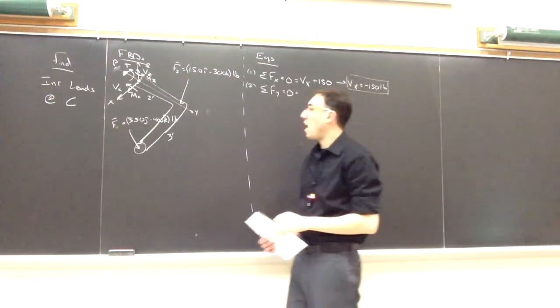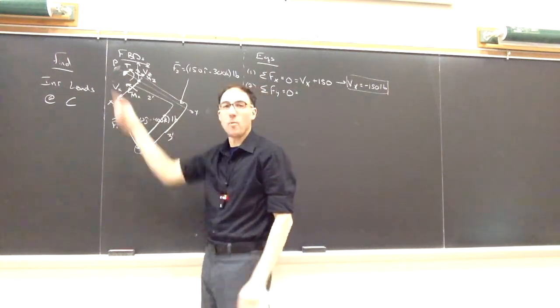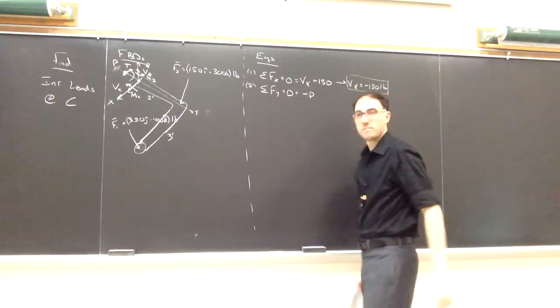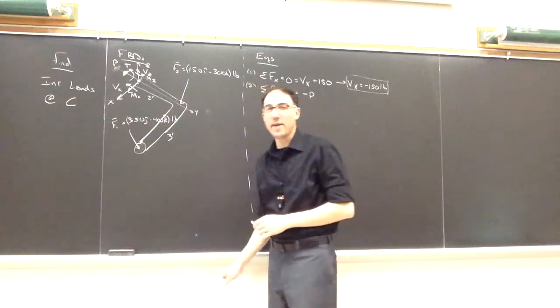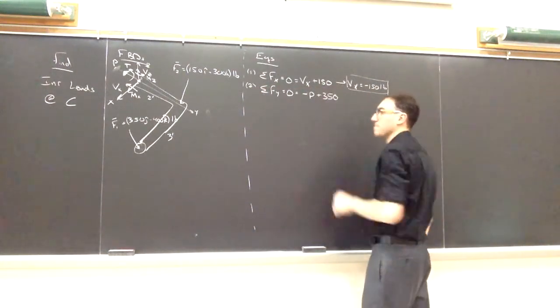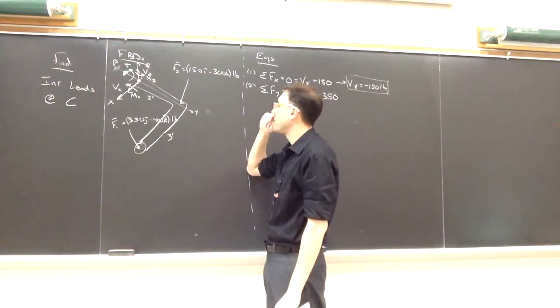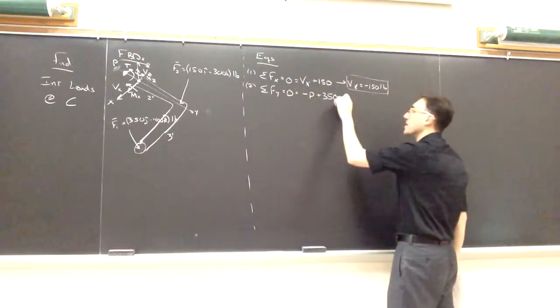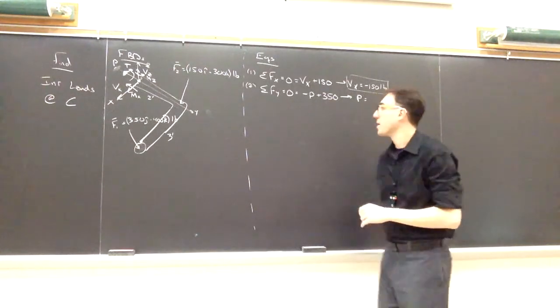In the y direction, according to my coordinate system, I have P in the negative y direction. So in my equation, it'll be a negative P. I have 350j from F1 or 350 along the y-axis. And F2 does not have a j term. So then this is my complete equation two, which means I can solve for my only unknown, which is going to be P, is 350 pounds.